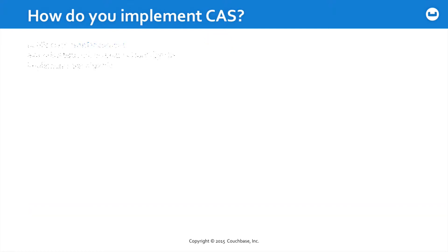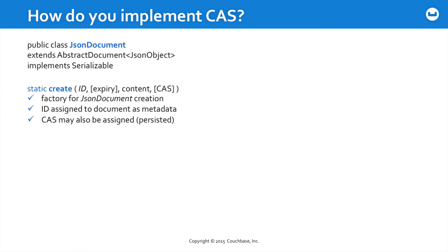So how do you implement CAS? In a sense, it's built in. With a JSON document, we have this factory method where we're creating each individual document, and it's the document that we pass off to the server when we are inserting, removing, and replacing documents. Recall, you have a choice of passing documents or just IDs — so if you're managing CAS, you're going to want to be passing documents to the server. It's this create method that creates the JSON document, and the ID and the CAS value are being persisted within this particular object as metadata.